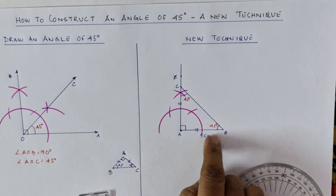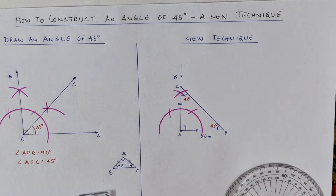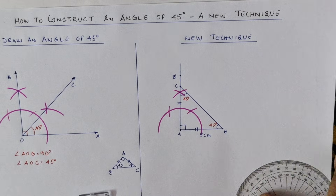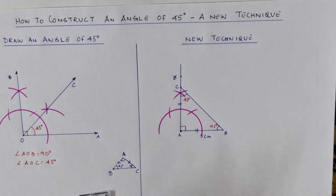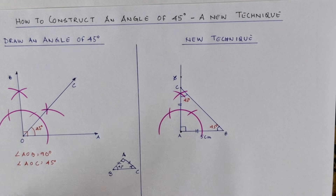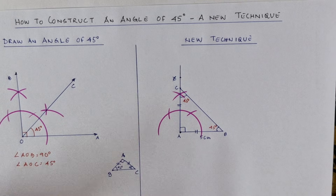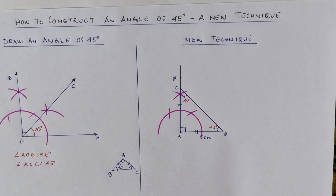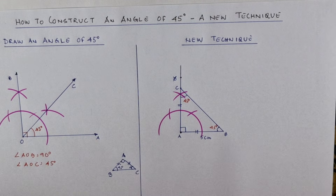Let's verify this with the protractor — see, between 40 and 50 it's 45. It automatically becomes 45 degrees. This is a very interesting way of constructing a 45-degree angle. You can practice this at home. Thanks for watching and for giving your valuable time. I'll bring many more construction videos — keep watching. Thanks again, have a great day, bye bye!